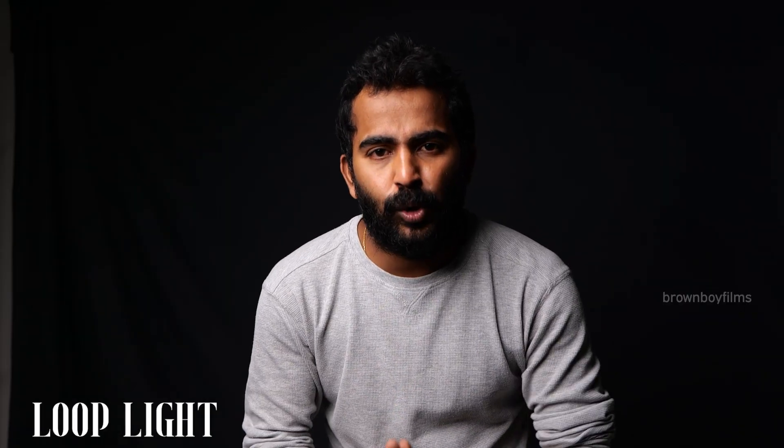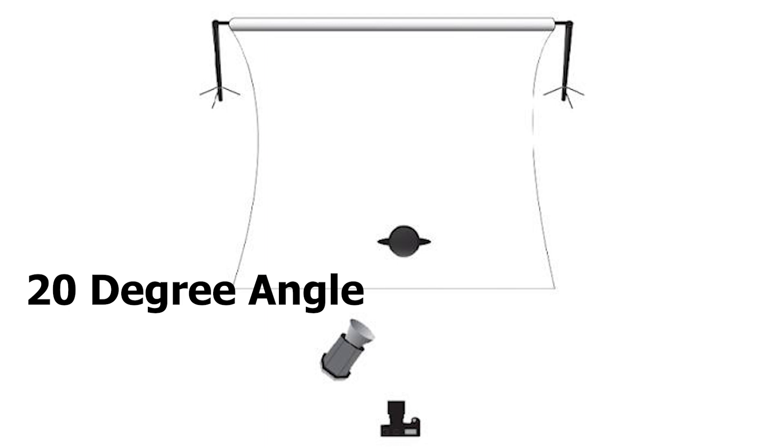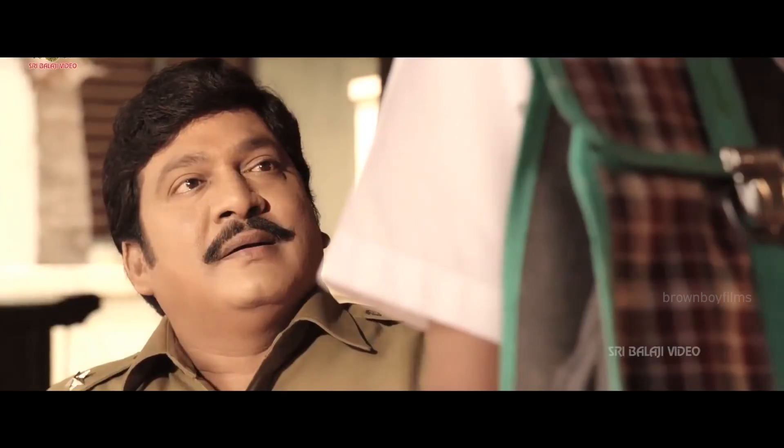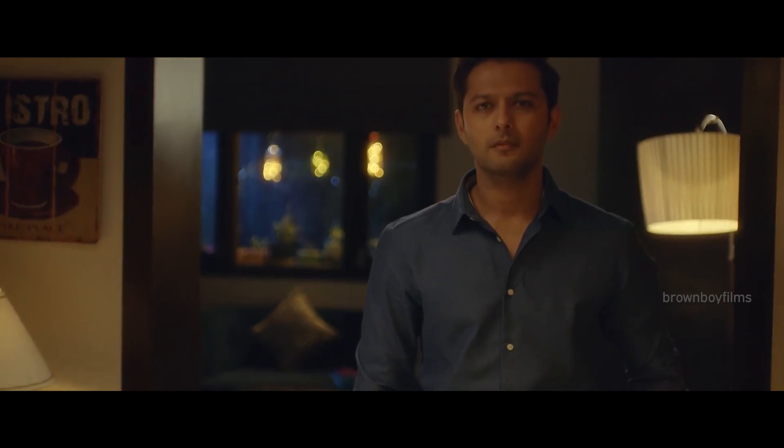The third lighting setup is loop lighting. Loop lighting is similar to butterfly light but shifted at a 20-degree angle to the right or left. It casts a nice shadow from the nose to one side. The light is on one side while shadows fall off on the other side. This light is usually used for flat-copy documentary-type interviews and gives a dramatic feel and a cinematic look for videos and interviews.